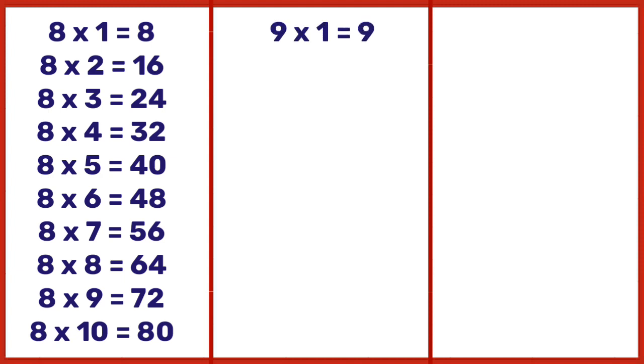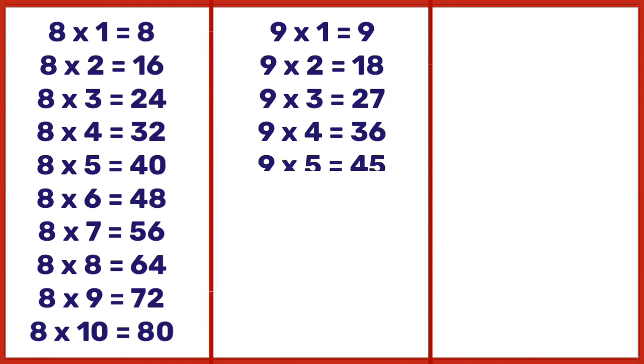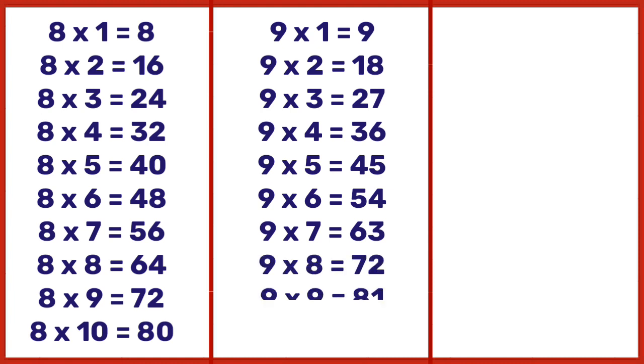9 times 1 is 9, 9 times 2 is 18, 9 times 3 is 27, 9 times 4 is 36, 9 times 5 is 45, 9 times 6 is 54, 9 times 7 is 63, 9 times 8 is 72, 9 times 9 is 81, 9 times 10 is 90.